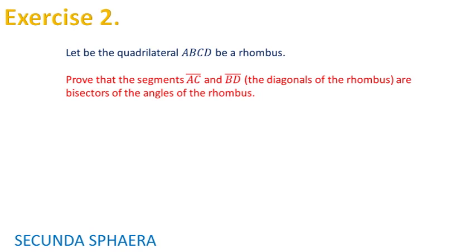Let me move you to the second exercise of this video which says let be the quadrilateral ABCD a rhombus. The problem asks, prove that the segments AC and BD which are the diagonals of the rhombus are bisectors of the angles of the rhombus.